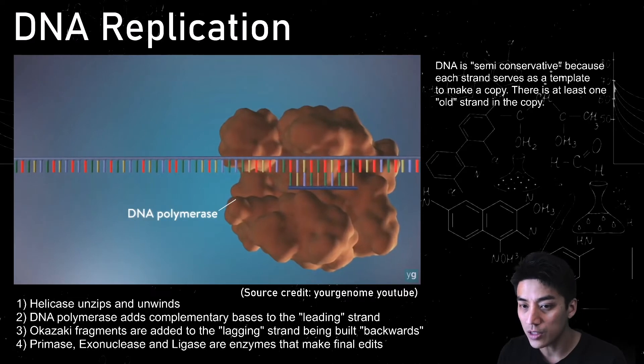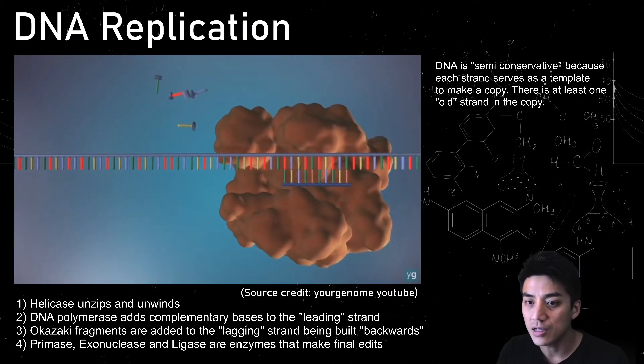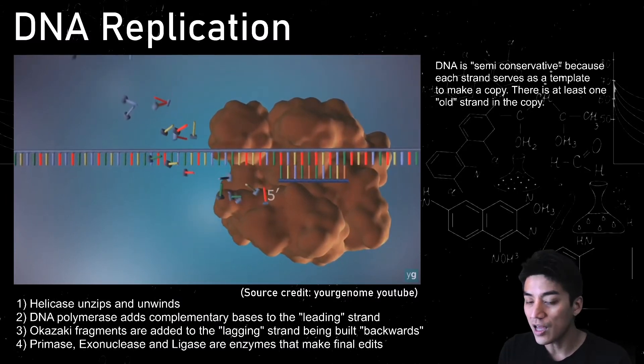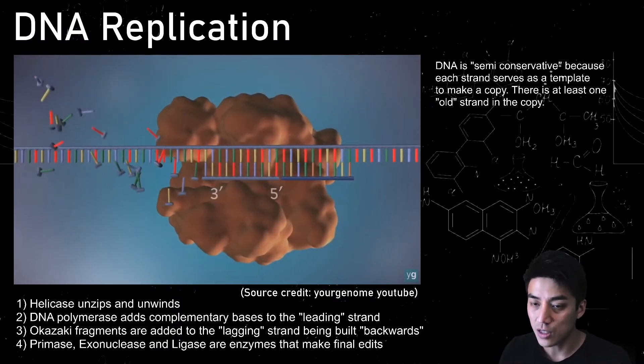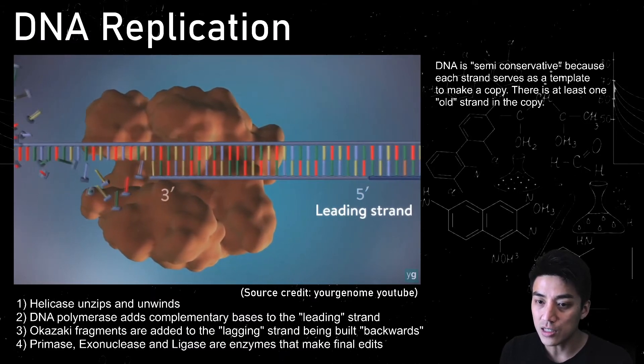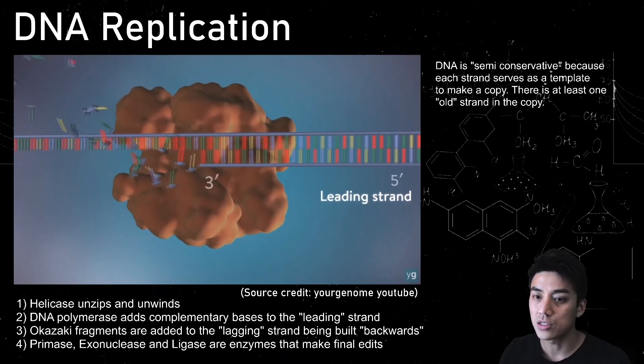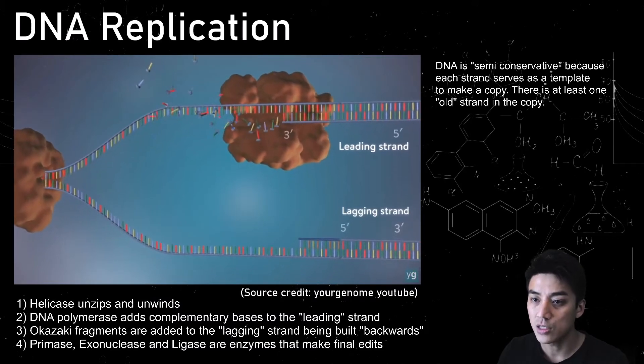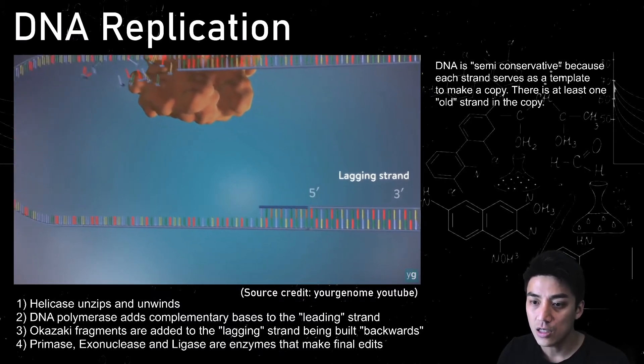So another enzyme will then come in called DNA polymerase, and it starts adding complementary bases. So remember, if there's an A, a T will come in. If there's a C, a G will come in. And it's almost like a brick layer. It starts pairing up these bases, and this is how the leading strand copies itself. It goes in the forward direction, so it's quite easy for the leading strand to do this. It just moves in one direction. It's one continuous flow, and it just lays down each nucleotide.